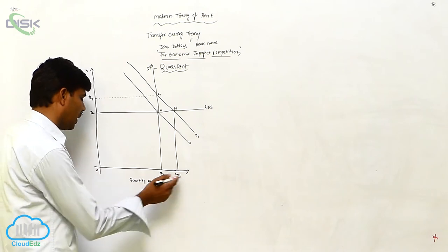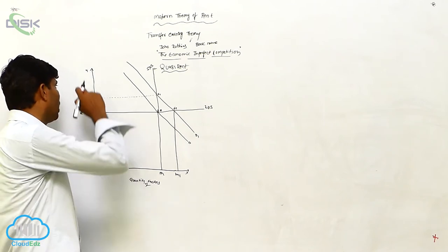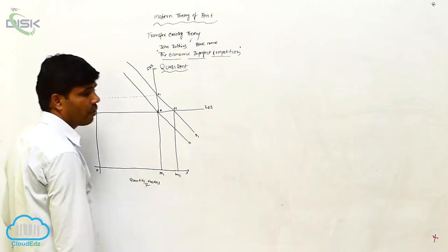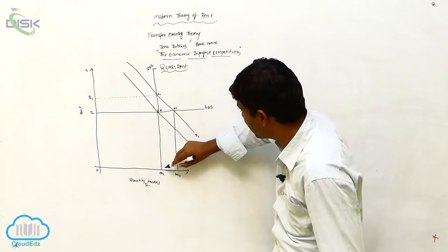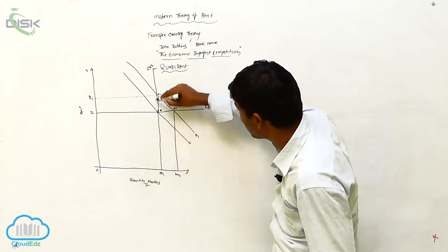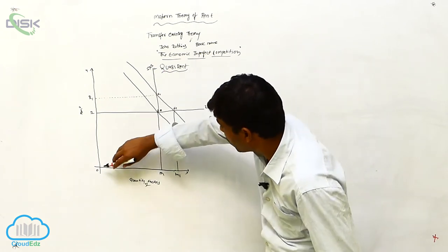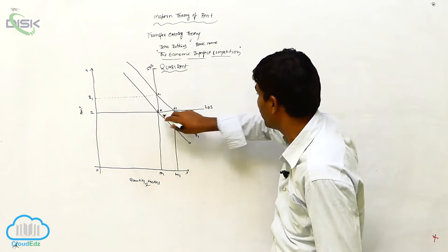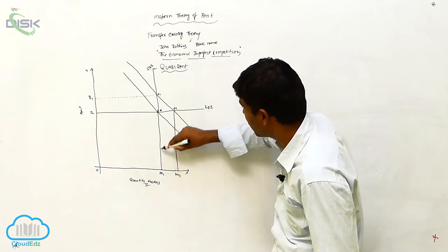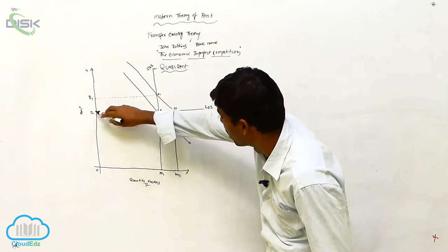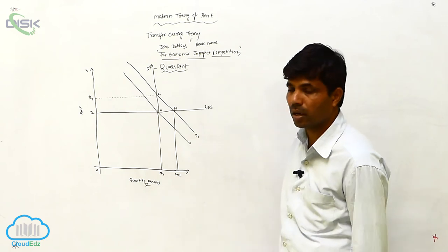We have to consider OX — the quantity of factors. And now OY, OY. We are going to consider rents. When you are using the curve MOM, it is increasing up to SPS, and in OR it is going to the curve — the long-run curve LPS. This is the MO.